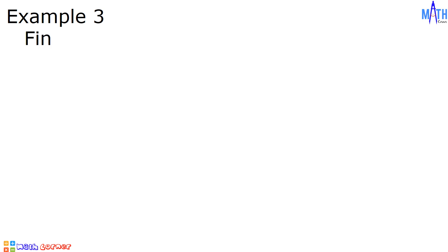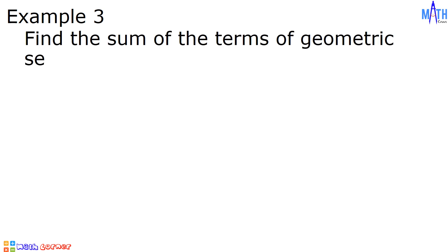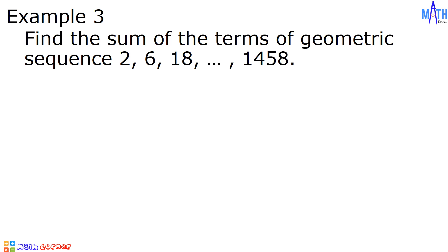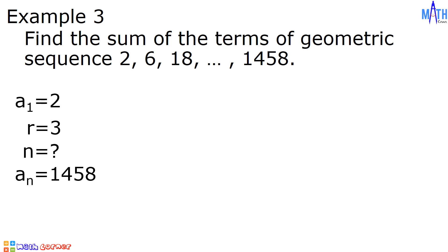Example number 3: let us find the sum of the terms of the geometric sequence 2, 6, 18, up to 1458. Let us determine all the given values: A sub 1 is equal to 2, r is equal to 3, n is unknown since the number of terms is not indicated, and the last term is 1458. Our first step in solving this problem is to solve for n. We will be using the formula A sub n equals A sub 1 times r raised to n minus 1.